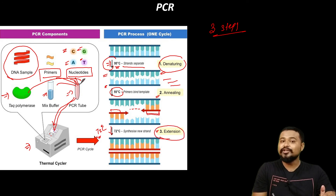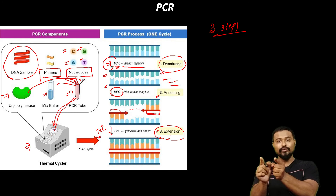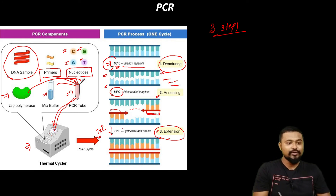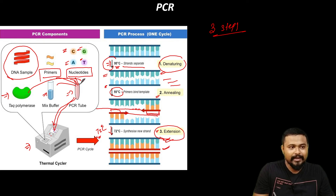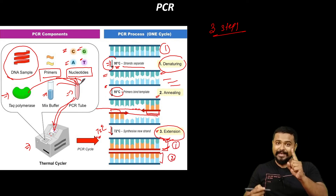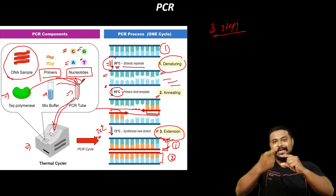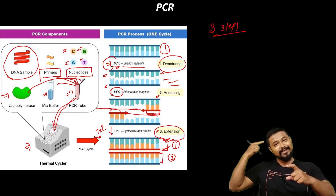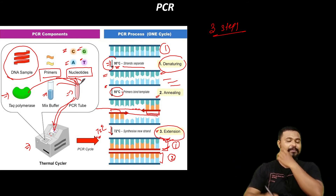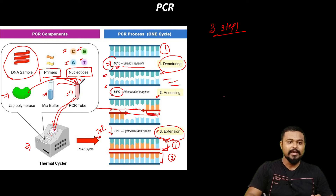The extension step means: from where the primer has bound, new nucleotides are added along the length of the strand. New nucleotides extend the primer to form a new strand. So from a single strand, you get a double strand. After one cycle, you have double-stranded DNA. After the second cycle and third cycle, copies keep multiplying.